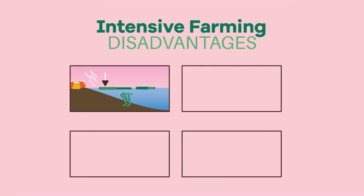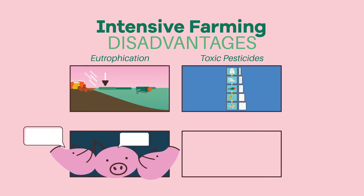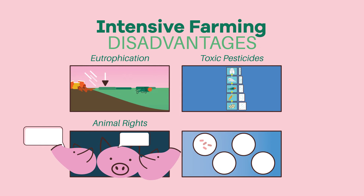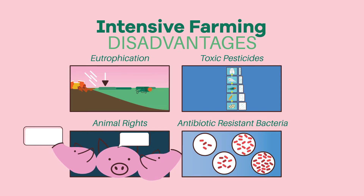Disadvantages include: it uses fertilizers which can cause eutrophication; it uses pesticides which can accumulate in the food chain and become toxic; it raises questions regarding animal rights; and the systematic treatment of farm animals with antibiotics has increased the amount of antibiotic-resistant bacteria, making it harder to treat humans for these infections.